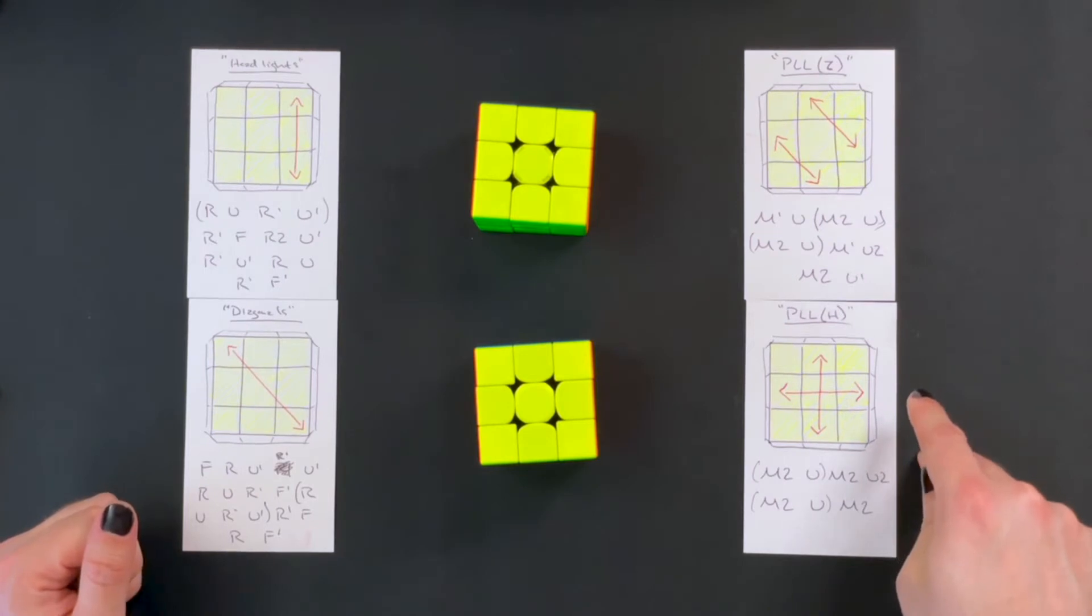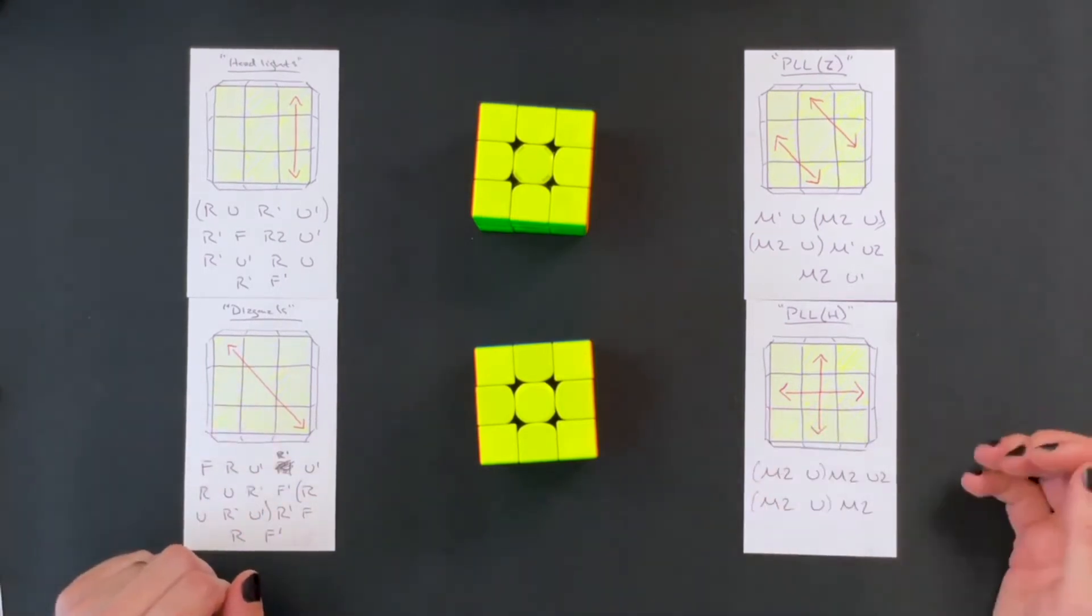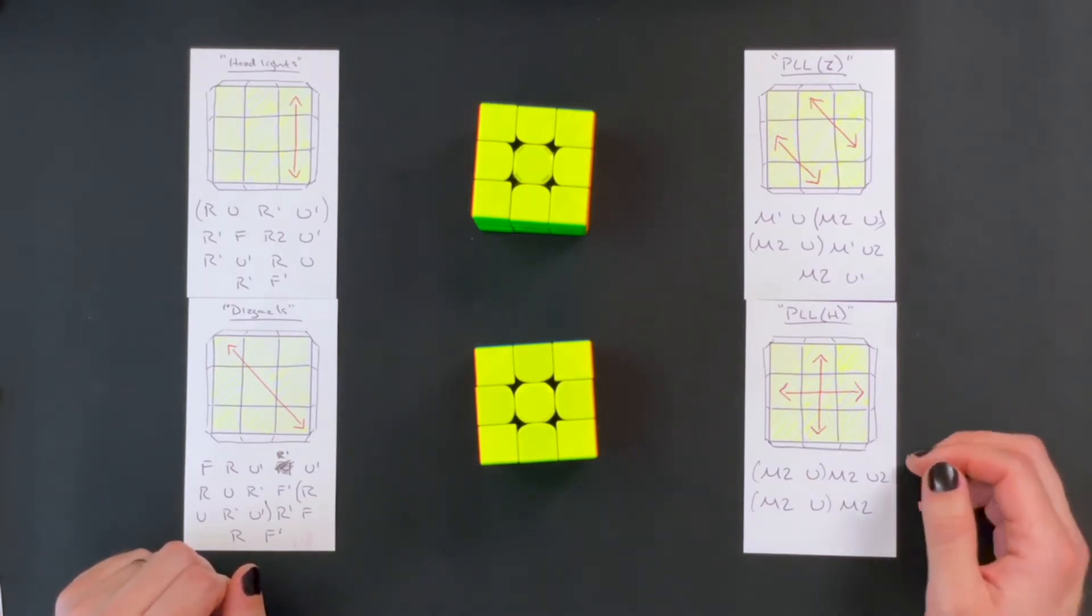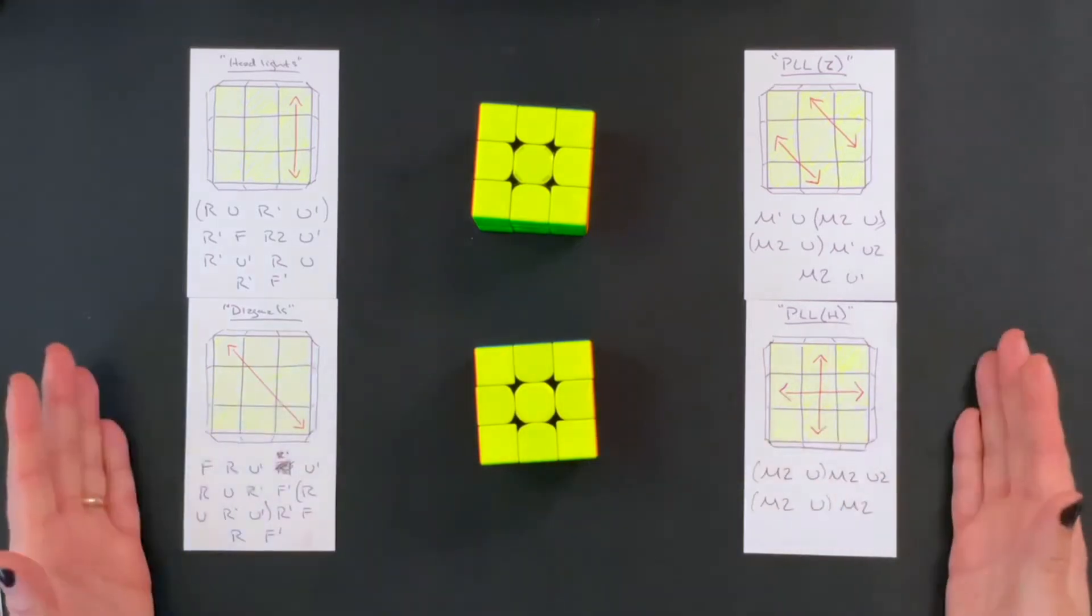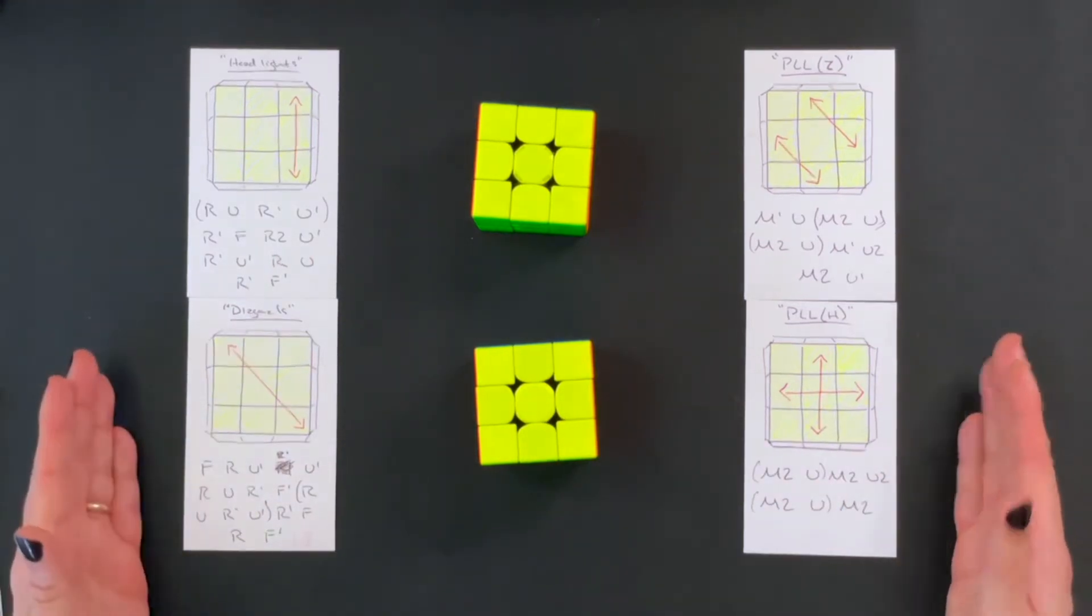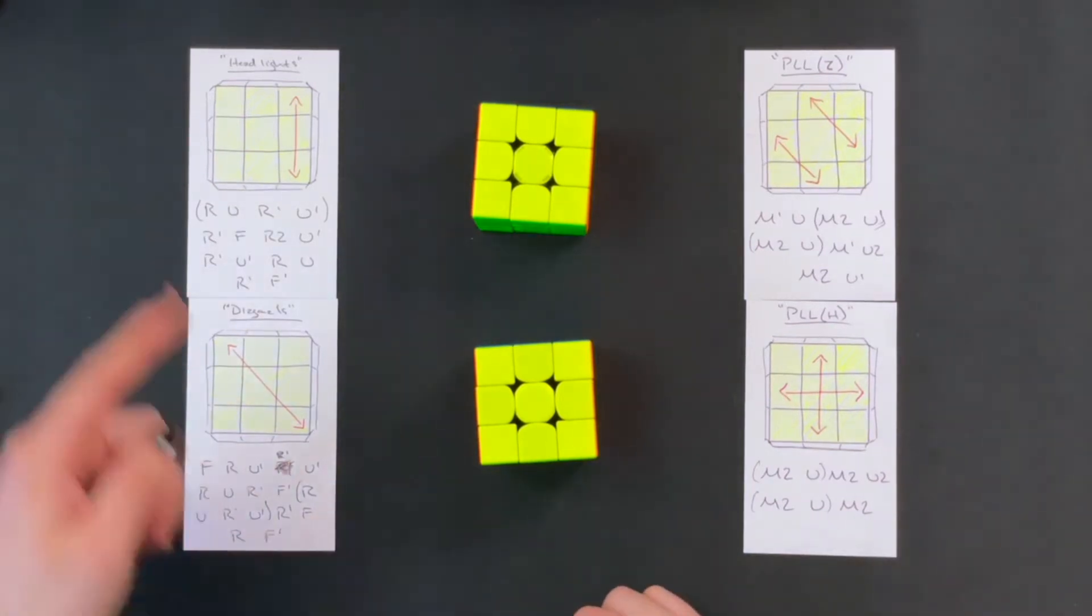Having come from the beginner method I didn't learn the UA or UB algorithms and instead I just stuck with solving those the beginner method way. So that is something that I am still going to need to work on. I know that the U algorithms are faster and I just need to go through the work of learning them.